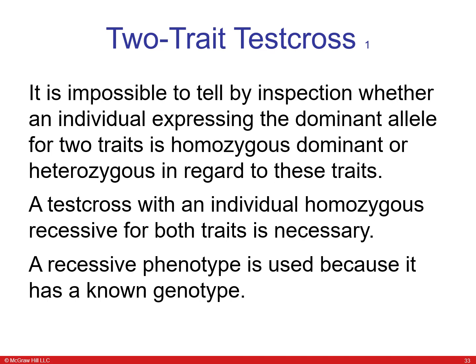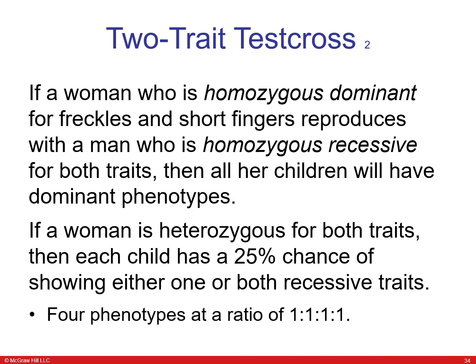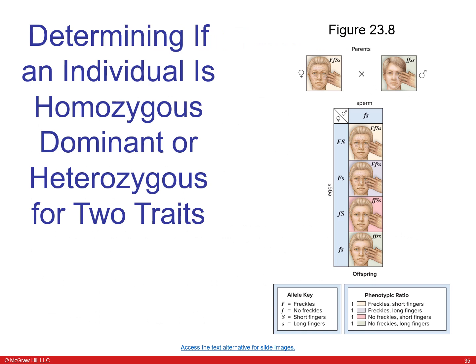By inspection of an individual expressing a dominant allele, you cannot tell if they are homozygous or heterozygous dominant. So a test cross must be done with someone showing a recessive phenotype, since we know the genotype there. If a woman homozygous dominant for freckles and short fingers reproduces with a homozygous recessive man, all children will have dominant phenotypes. If a woman is heterozygous, each child has a 25% chance of showing one or both recessive alleles, giving a one-to-one-to-one-to-one ratio of four phenotypes.